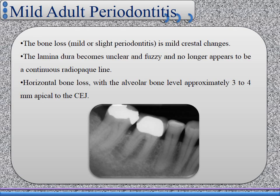Mild adult periodontitis. The bone loss is mild or slight, with mild crestal changes. As we see in the radiograph, the lamina dura becomes unclear or fuzzy and no longer appears as a continuous line — it appears as an interrupted radiopaque line. Horizontal bone loss occurs, with the alveolar bone level approximately 2 to 4 mm apical to the cementoenamel junction. The normal distance from the cementoenamel junction to the alveolar crest should be 1 to 1.5 mm; if this distance is about 2 to 4 mm, this indicates mild adult periodontitis.